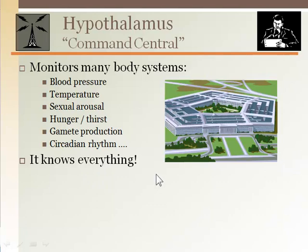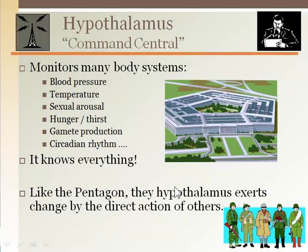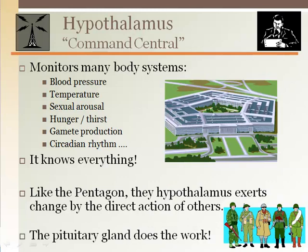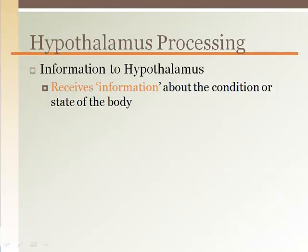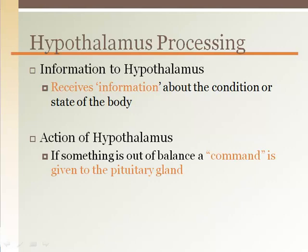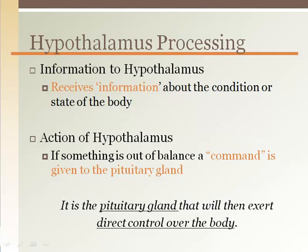Once a particular parameter is considered to be out of homeostasis or out of balance, the hypothalamus communicates with the pituitary gland to fix the problem or carry out an action. Like the pentagon, after processing the input it receives, it then asks some form of the military to carry out the action — in this case, the pituitary gland does the work. What is important here is that the hypothalamus does not directly control any organ or tissue; it only controls the pituitary gland, which will then target the tissues or organs of the body.